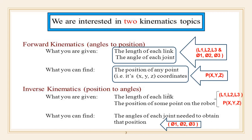Theta1, theta2, theta3 up to theta-n are the joint space parameters, and P(X, Y) are the Cartesian space coordinates. This is the basic difference between forward kinematics and inverse kinematics according to the given parameters and findings.